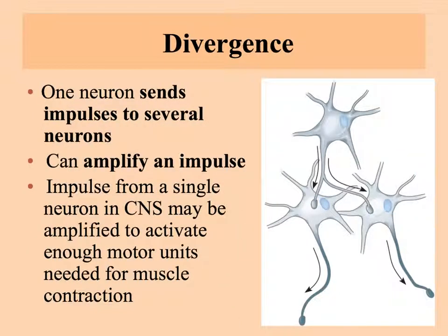The opposite type of connection is divergence, where one neuron sends impulses to several different neurons. This will amplify an impulse — that one neuron will cause two neurons to respond, which could cause four neurons, and on and on to much larger amounts. In this case, a single neuron may be able to amplify its impulse enough to activate some motor units so that you can actually have muscle contraction triggered by even a single neuron.